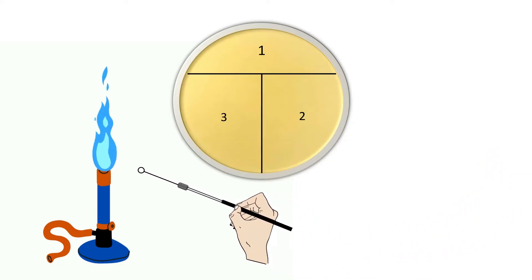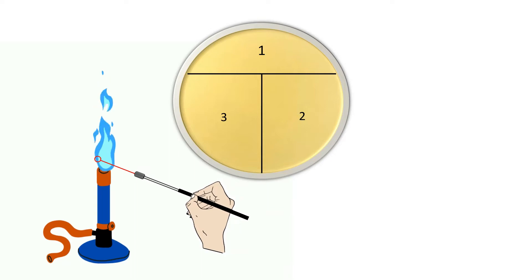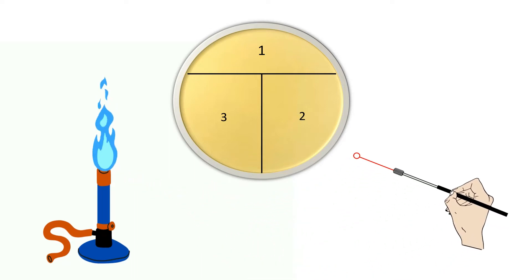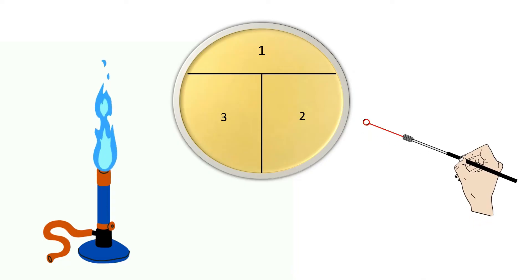In the next step, flame sterilize the wire loop. Hold the wire loop in the flame for a few seconds. After flaming, allow the wire loop to cool down completely. Now the loop is sterile and you can take out culture sample using this loop.